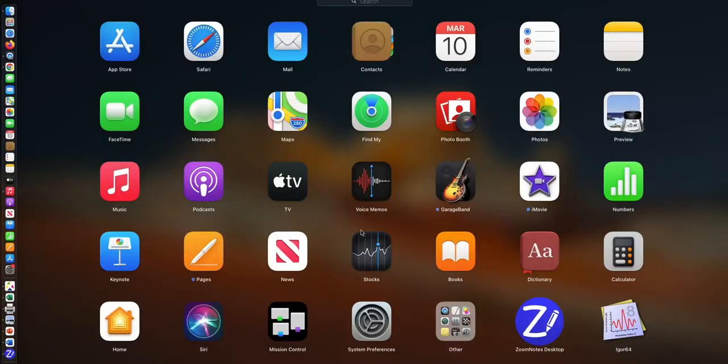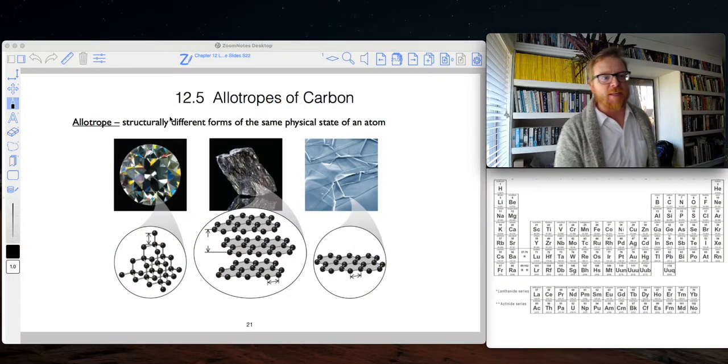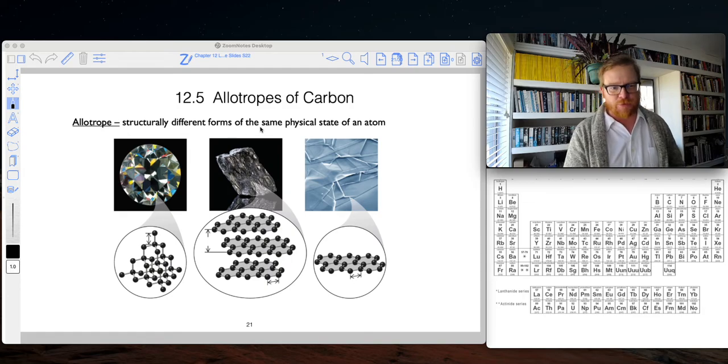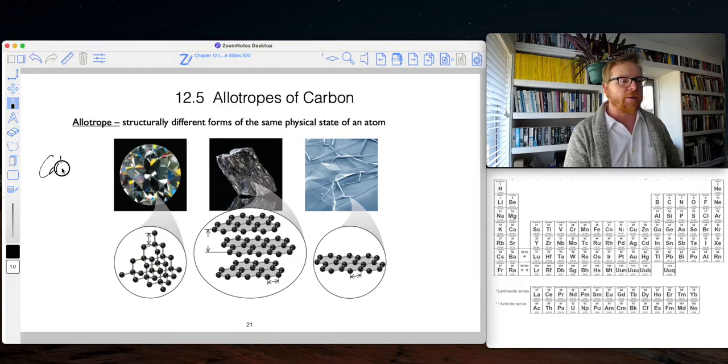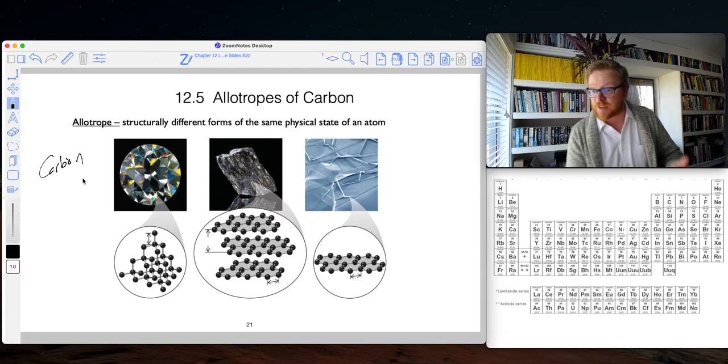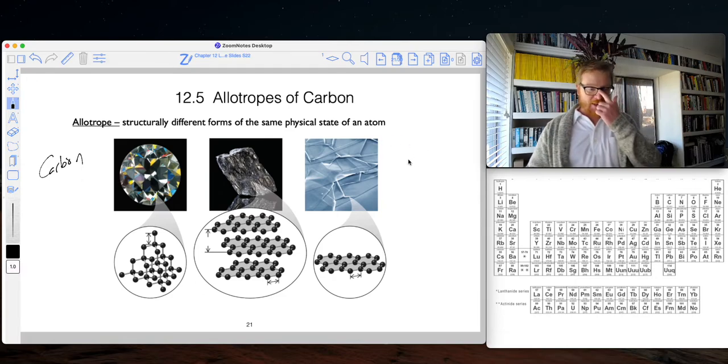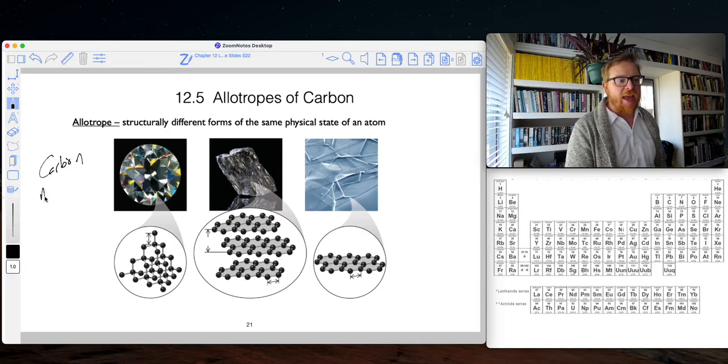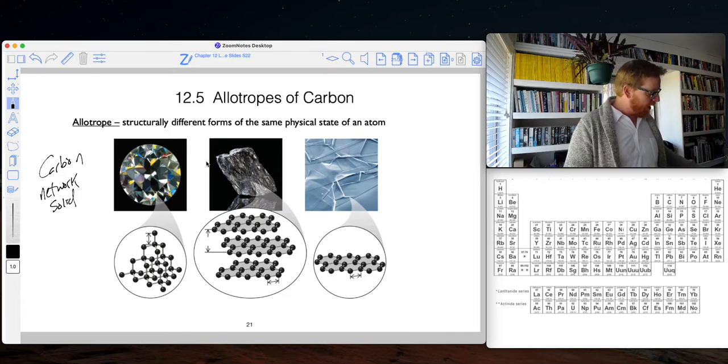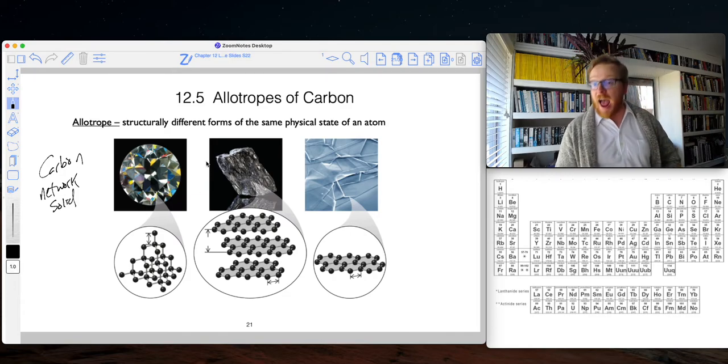So what is an allotrope? That is something that is a structurally different form of the same physical state of an atom. So these are all carbon allotropes. Hopefully we remember that carbon is not only an atomic solid, but because it's a non-metal, it is a network solid. And so here's our three commonly occurring allotropes.